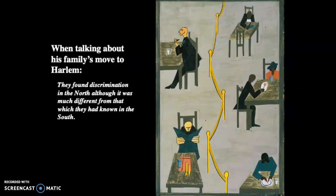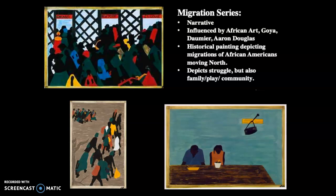Then we have Jacob Lawrence. His Migration Series was a grant he earned, and he made the whole series together — about 60 paintings, all roughly one and a half by one foot. They're all done around the same time and planned out, so they match in style, tones, and colors — they work as a series together. Neither MoMA nor the Phillips could afford all of it, so they bought it in conjunction. The series documents the migration of African-Americans to the North in the 1920s. His parents were part of that migration and he was actually born on the migration. It's a narrative influenced by African art, Goya, Daumier, and Aaron Douglas — historical painting depicting the migration — with hard moments but also family life and the dignity of the family.